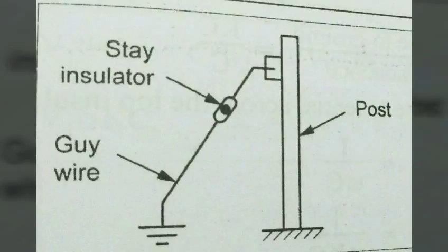Next, shackle stack insulators. Nowadays, these insulators are used for a voltage of 110 kV. In this type, the disks are arranged as a stack. These types of insulators are easy to handle.